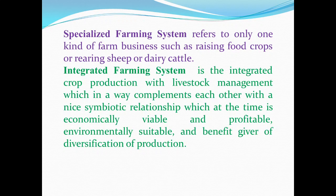Last but not least, integrated farming system. Integrated farming system is the integration of crop production with livestock management, which complements each other in a symbiotic relationship that is economically viable and profitable, environmentally suitable and provides benefits through diversification of production. It focuses on increasing farm productivity by increasing diversification of resources, resource integration and creating market linkage.